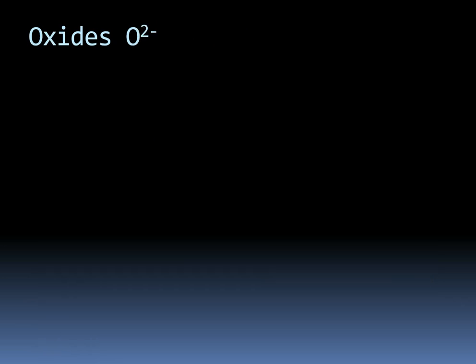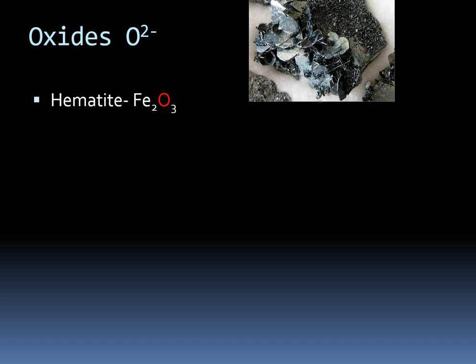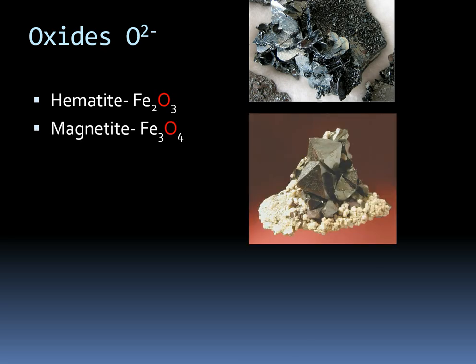Oxides are recognized by the oxygen anion. Carbonates had oxygen too, but those had to be bonded to a carbon — in this case it's just an oxygen by itself bonded to the cation. Our first common one is hematite, which is basically rust — it's an iron oxide. Magnetite is an iron oxide as well, and the difference between these two is the charge on the iron atoms.